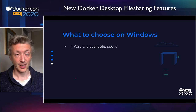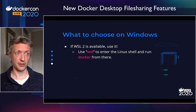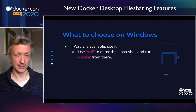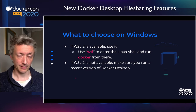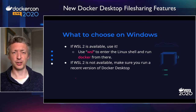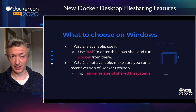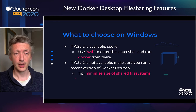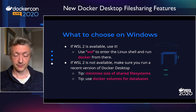What should you choose if you're running Windows? If WSL2 is available, I would definitely recommend using it. The trick is to bear in mind you've got both Windows and Linux side by side — two parallel file systems — and performance is very sensitive to where the files are and where the containers are. I would recommend always using the WSL command, entering the Linux shell, using Docker from inside there, and launching VS Code from there. If you haven't got WSL2 available because you have to use an old version of Windows, make sure you run a recent version of Docker Desktop with lots of performance optimizations, minimize the size of shared file systems, and use Docker volumes for databases.